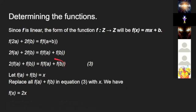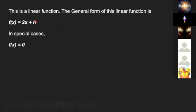We have 2x = f(x). This is a linear function, and the general form of this linear function is f(x) = 2x + n, and in special cases when n is zero, f(x) = 2x.